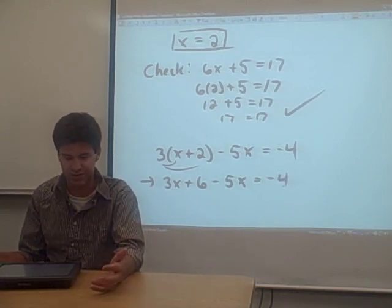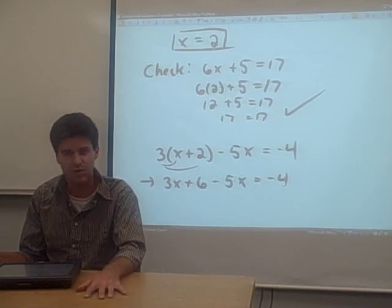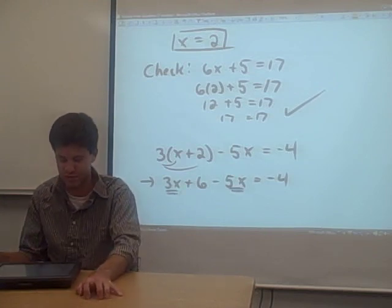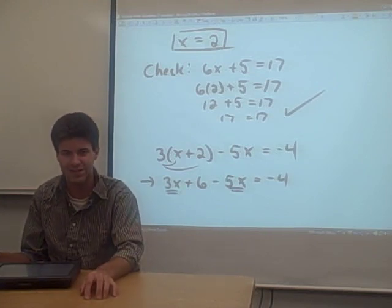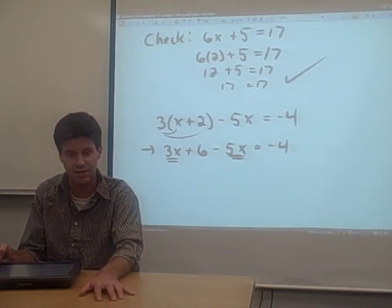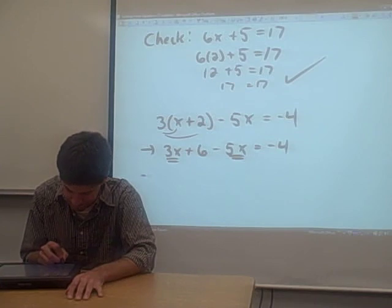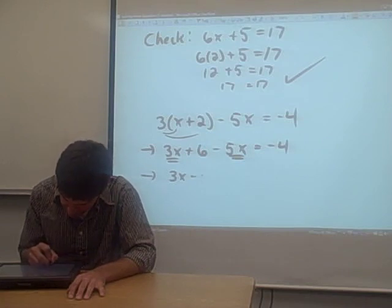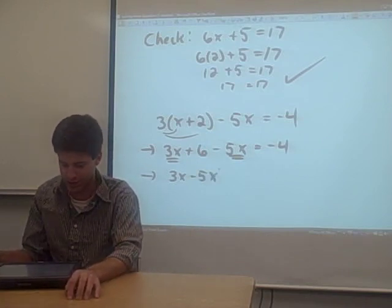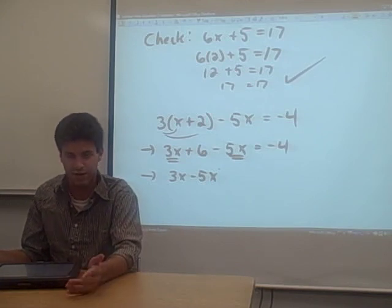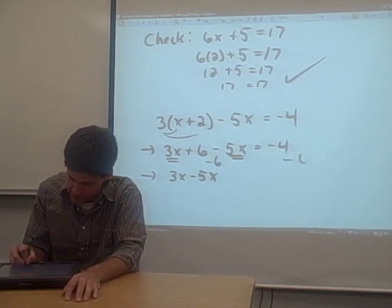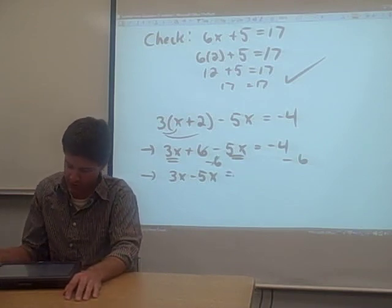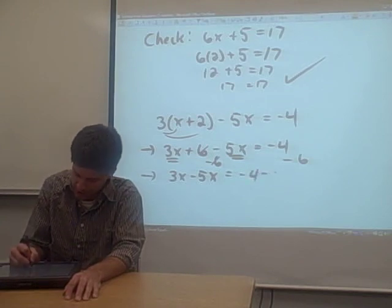Now our goal, like in the first problem, is to take every term that has an x in it and keep it on one side of the equation, and take everything else and move it to the other side of the equation. So in this case we have two terms, both of those terms have x's on them. So we need to keep those on that side of the equation and move everything else to the other side of the equation. So we're going to end up with 3x minus 5x on the left-hand side of the equation. But how can we actually get that on the left-hand side of the equation? The answer is, we have to subtract 6 from both sides of the equation. That way those 6s cancel out of the left-hand side of the equation. And on the right-hand side of the equation we're just left with minus 4 minus 6.